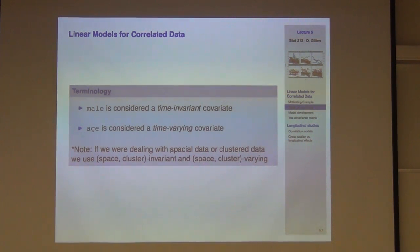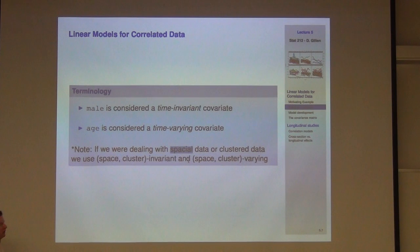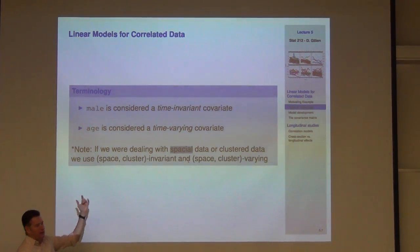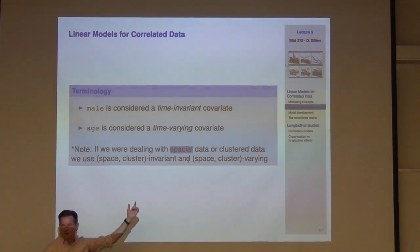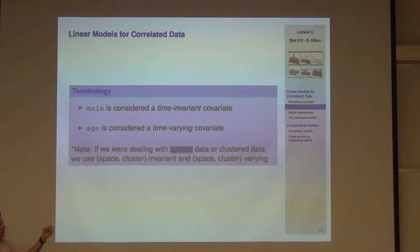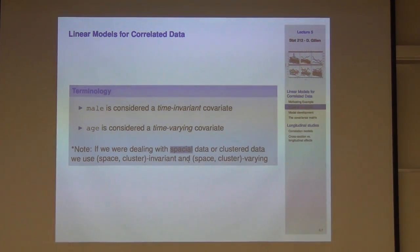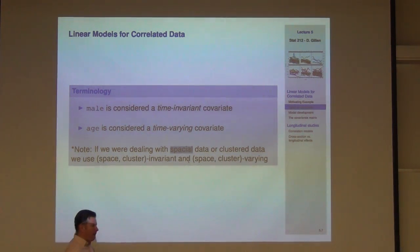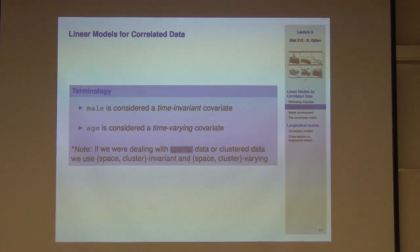Just a quick note: there's a typo on the slide — it should be a T, not a C. If you were dealing with spatial data, the terminology just switches slightly to space-invariant or space-varying covariates, or cluster-invariant versus cluster-variant. These are the ways people refer to them.